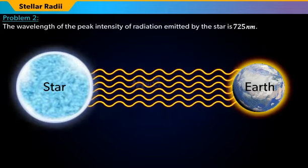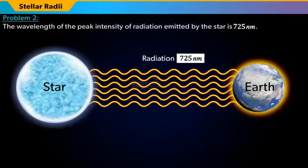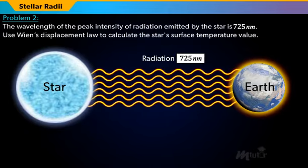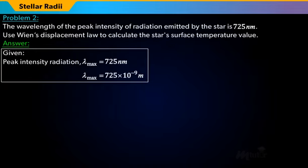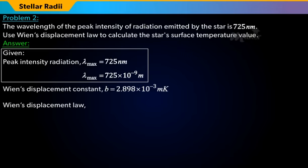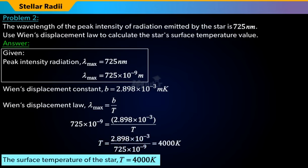Problem 2: The wavelength of the peak intensity of radiation emitted by the star is 725 nanometers. Use Wien's Displacement Law to calculate the star's surface temperature. Substituting the given values of lambda max into Wien's Displacement Law, lambda max = B/T, we get T = 2.898 × 10⁻³ / (725 × 10⁻⁹). By solving, the value of the surface temperature of the star is 4,000 Kelvin.